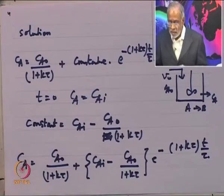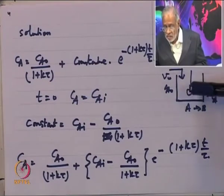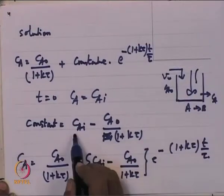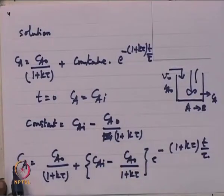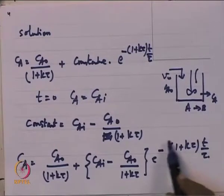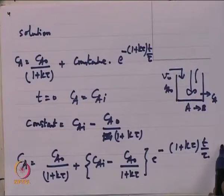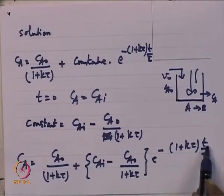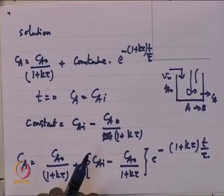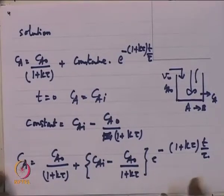Substituting the initial condition, the full solution becomes: CA = CA0/(1 + k·tau) + [CA_i − CA0/(1 + k·tau)] · e^(−(1 + k·tau)·t/tau). At t equals infinity, the exponential term goes to zero, and CA equals CA0/(1 + k·tau), which is the known steady state result for a CSTR.